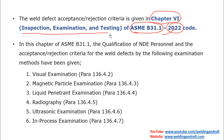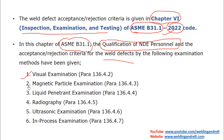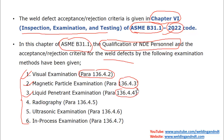In Chapter 6 you will get the acceptance or rejection criteria of welding defects. The chapter also covers qualification of NDT personnel. For visual examination you need to follow para 136.4.2; for magnetic particle test, para 136.4.3; for liquid penetrant test, para 136.4.4; for radiographic test, para 136.4.5; and for ultrasonic examination, para 136.4.6.